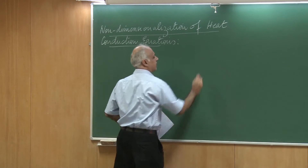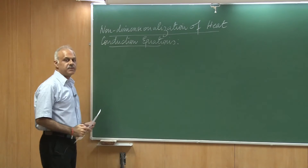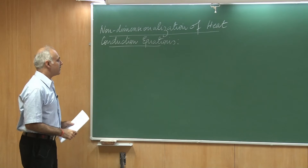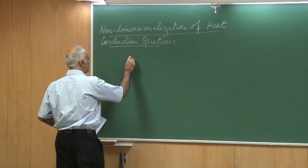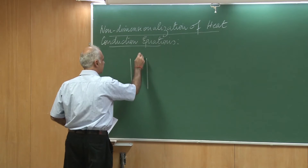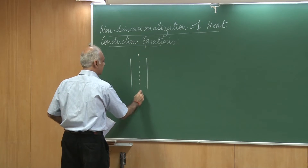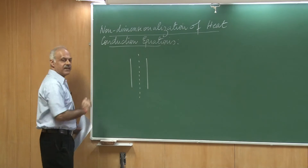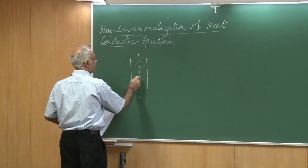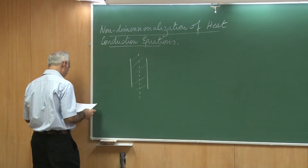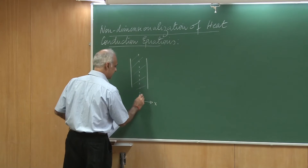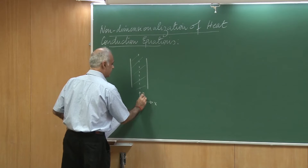To do this, we will set up a simple problem — a semi-infinite slab. The slab is infinite in the y direction, extending all the way along the plus and minus y axis. Let us set up the axes: this is the x axis and this over here is the y axis.